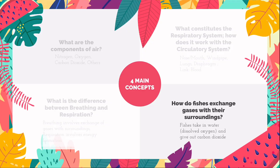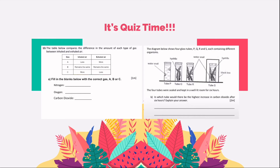And now, it's time for a short quiz! Pause the video to attempt the following question on your own. When you are done, continue with the video. For part A: nitrogen is gas B, oxygen is gas C, and carbon dioxide is gas A. Nitrogen is not used by the body for any processes, so the amount of nitrogen in inhaled and exhaled air stays the same. In inhaled air, oxygen is at 22% while carbon dioxide is at about 0.03%. In exhaled air, most oxygen is taken into the body cells for respiration to generate energy, and more carbon dioxide is produced. Thus, there is a decrease in oxygen and an increase in carbon dioxide between inhaled and exhaled air.